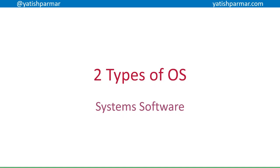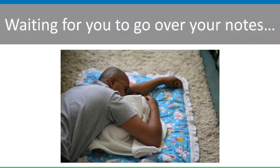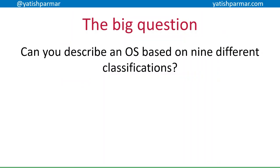This is the second video in the system software series, and this one is about the different types of operating system. Make sure you know what system software is, what an operating system is, and those five different functions. The point of this video is for you to be able to describe an operating system based on nine different types of classification.